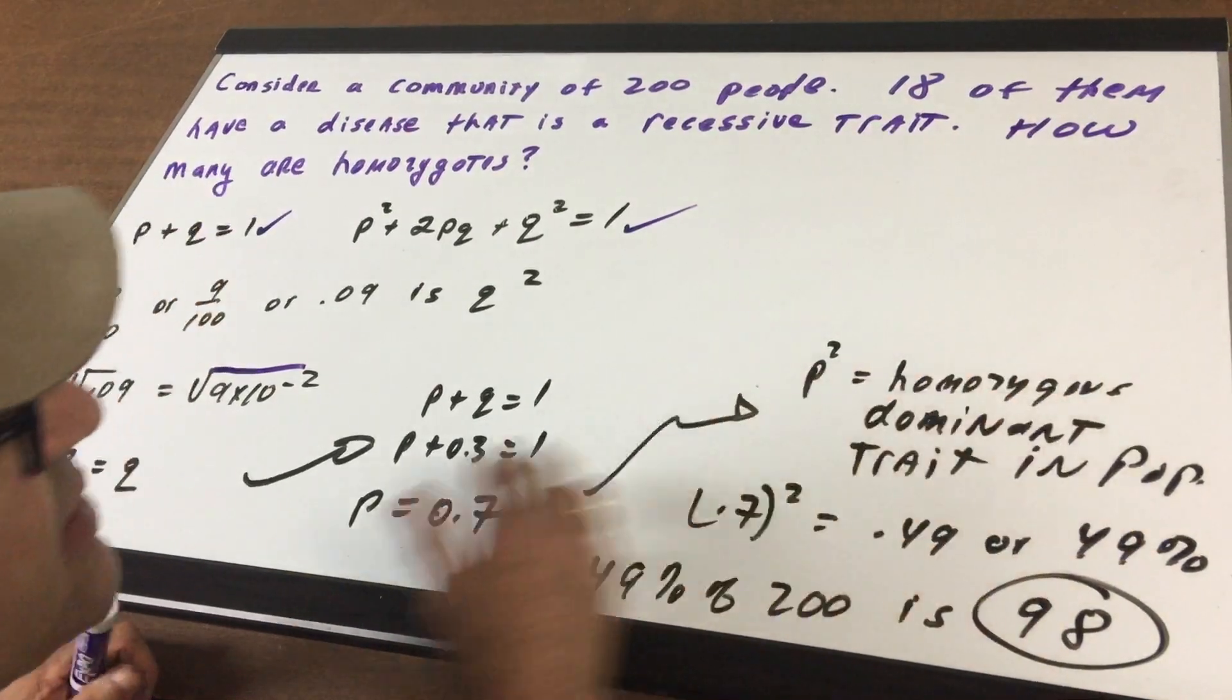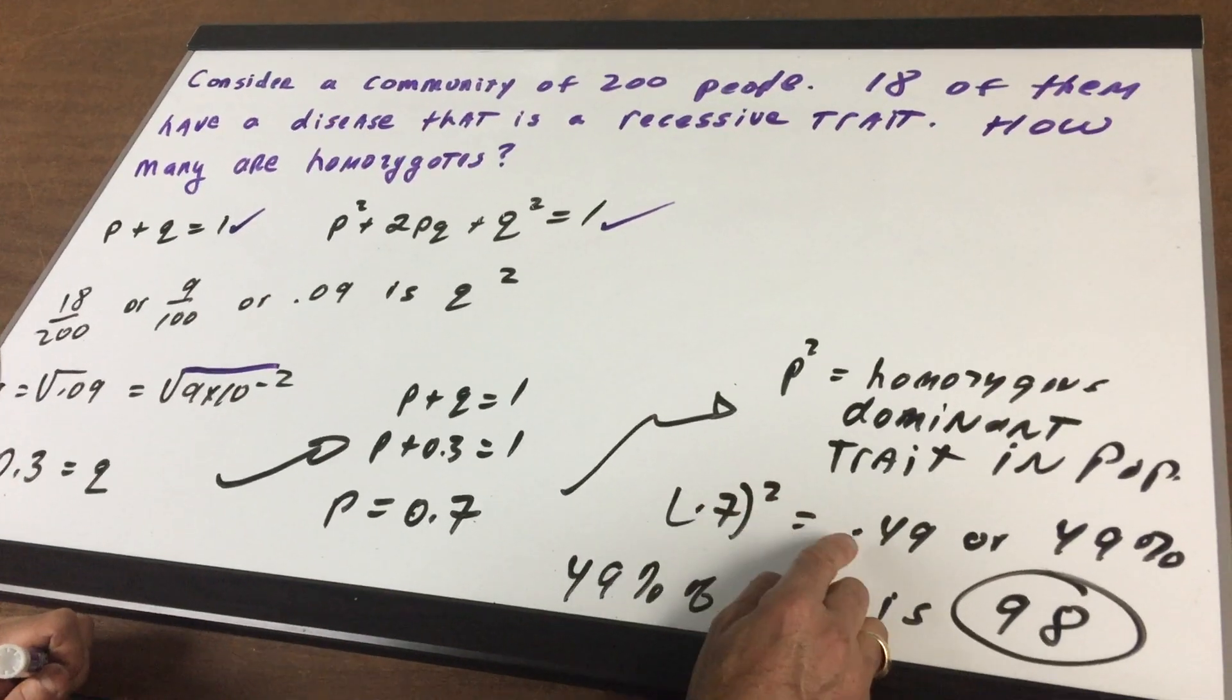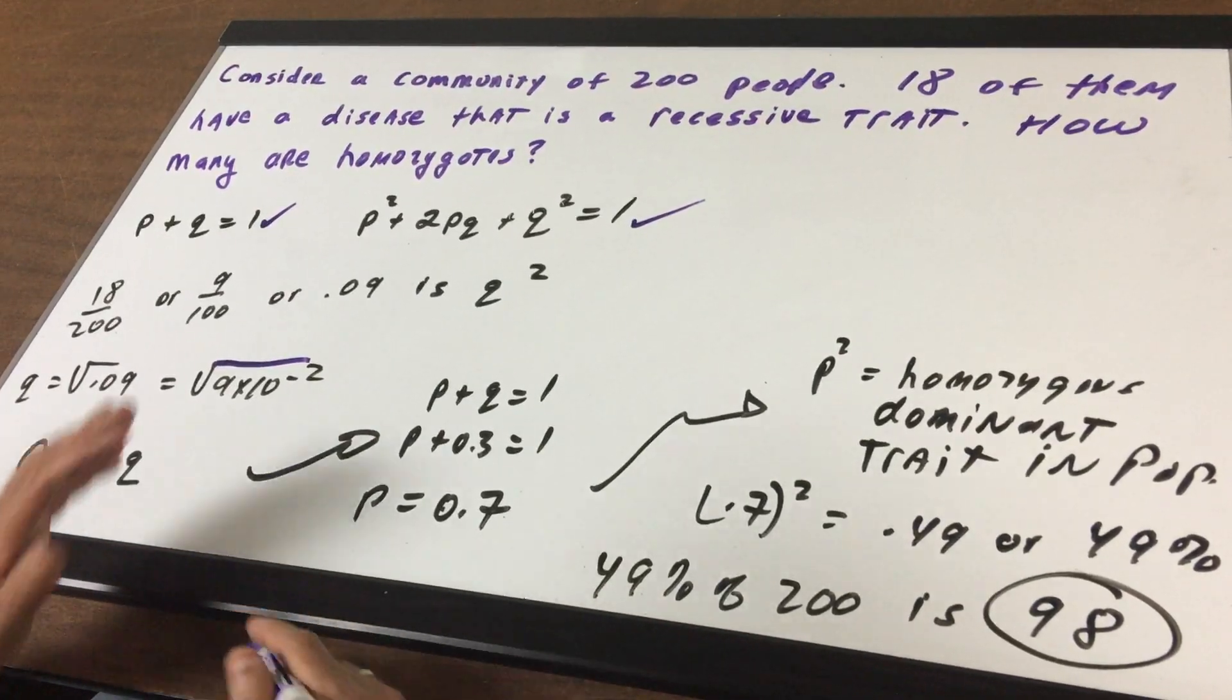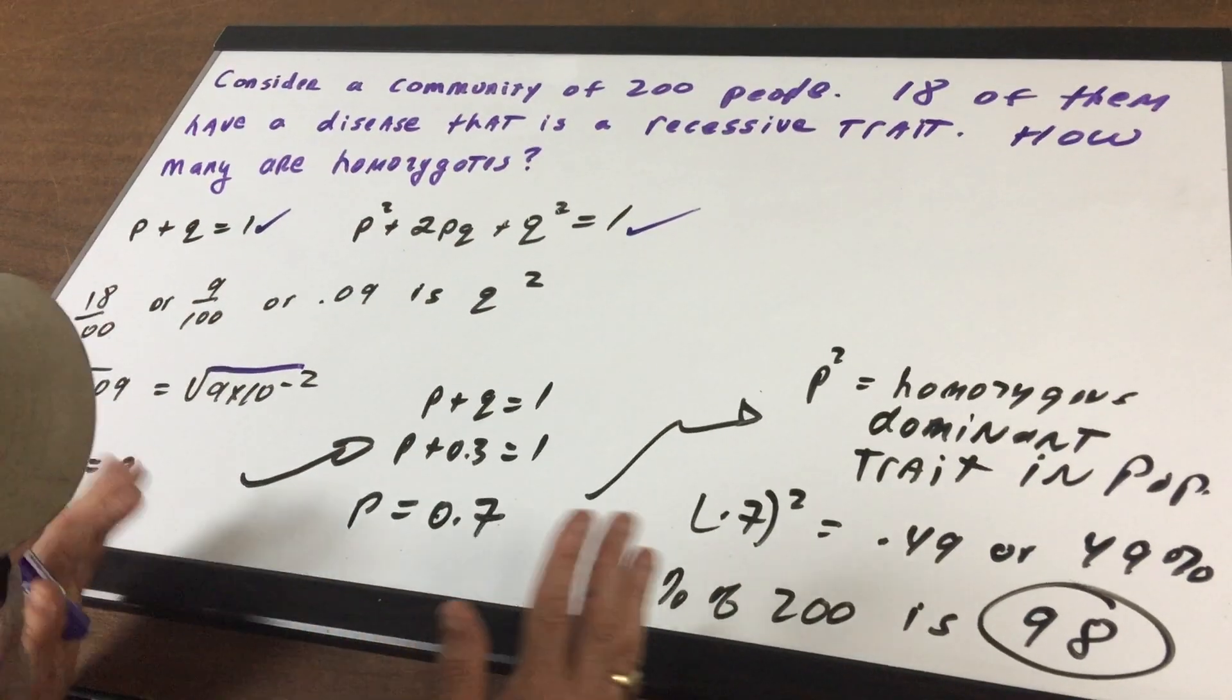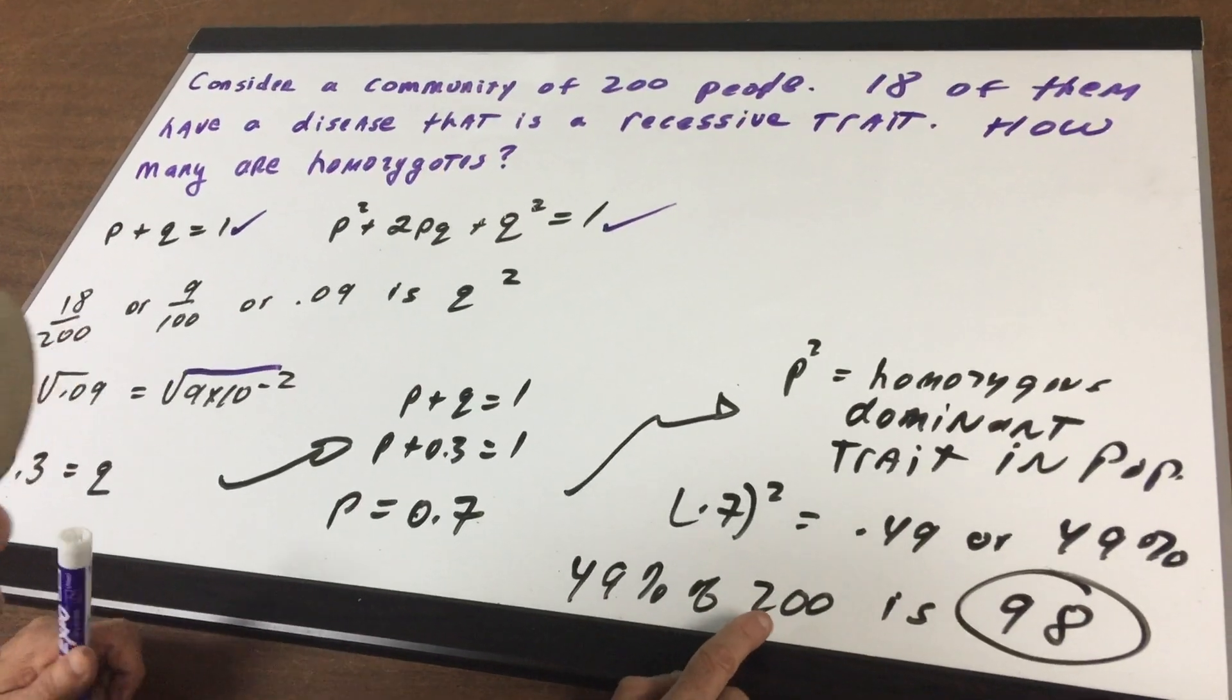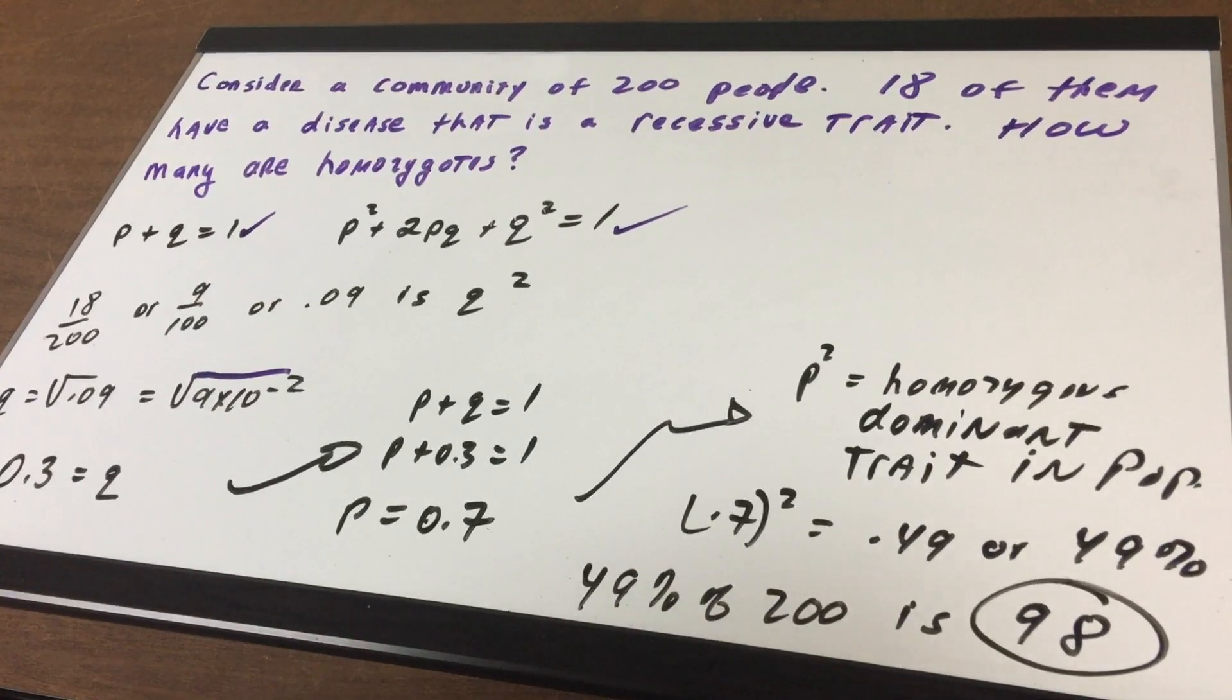Now the homozygotes in the population would represent P squared. So 0.7 squared would be 0.49, or 49 percent would be homozygotes. But be careful, I'm asking how many though, so not percentage. So we know we had 200 people. 49 percent of the 200 people, a little bit under 100. 49 percent of this would be 98.